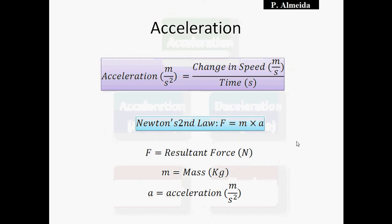There are two ways of calculating acceleration. You can use the acceleration formula: change in velocity over time taken — so change in velocity in meters per second divided by time in seconds — giving acceleration in meters per second squared. Or you can use Newton's second law: force equals mass times acceleration, with force in Newtons, mass in kilograms, and acceleration in meters per second squared. You choose which formula to use depending on whether you're given changes in speed and time, or resultant force and mass.